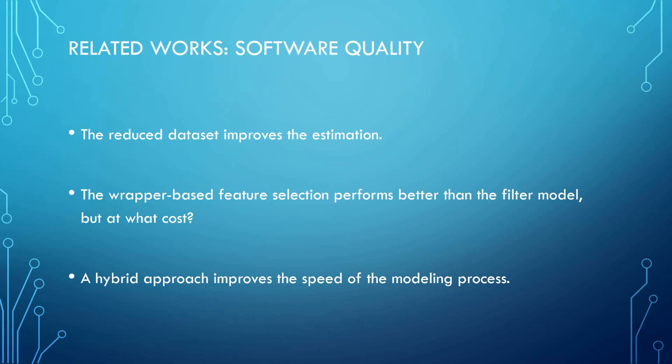Feature selection has been widely applied in many application domains, but its application in the software quality and reliability engineering domain is limited. The paper 'Finding the Right Data for Software Cost Modeling' studied the applications of wrapper-based feature selection in the context of software cost and effort estimation, concluding that the reduced dataset improved estimation. Another article, 'Detecting Fault Modules: Applying Feature Selection to Classifiers,' applied attribute selection with three filter models and two wrapper models to five software engineering datasets using the WEKA tool.